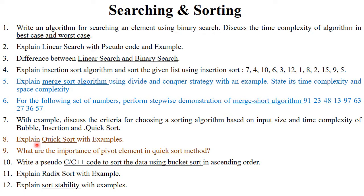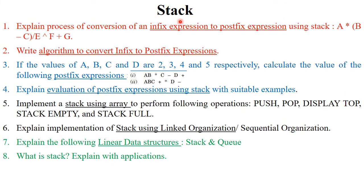On quicksort, they will ask you to explain quicksort with an example — prepare an example of your choice. Next, what is the importance of the pivot element in the quicksort method. Then, write a pseudocode to sort data using bucket sort in ascending order, or explain radix sort with example — they will ask any one sort with example. Last, explain sort stability with example, generally asked for six to eight marks. You should prepare one example of each sorting and searching technique.